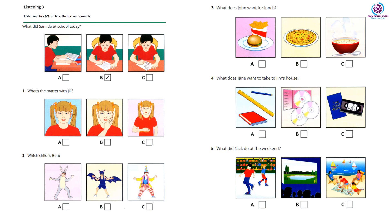5. What did Nick do at the weekend? Did you go to the beach at the weekend, Nick? No, we didn't, because it was cold and windy. So, what did you do? Did you go to the cinema? No. My friend Kim phoned, and we went skating.